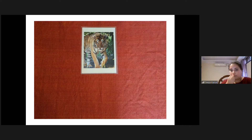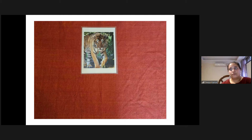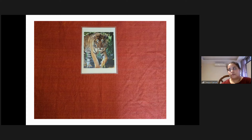Rồi thì khi mà bạn đặt cái bức hình này xuống, thì bạn sẽ bắt đầu nói về con hổ, nói về những chi tiết thú vị. Ví dụ như mình sẽ nói: 'Các con, đây là con hổ, nhưng mà con có biết một điều là con hổ này nó cũng thuộc họ mèo á? Con có con mèo ở nhà không? Con thấy con mèo nó có giống con hổ không? Nhưng mà con hổ này thực sự là nó thuộc họ mèo đấy.'